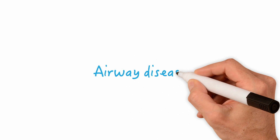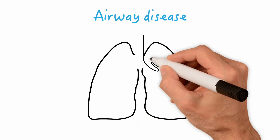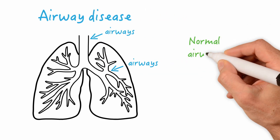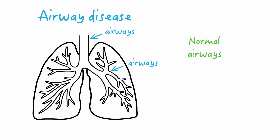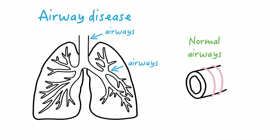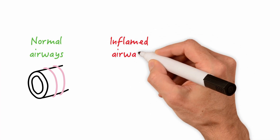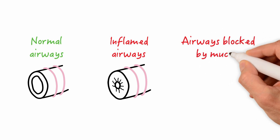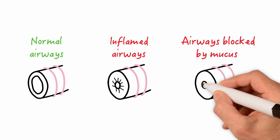First, the airway disease patient. When we refer to airway disease, we're simply referring to the physical airways that carry volume in and out of the lungs. Normal airways should be patent, allowing for adequate flow of volume. But in a patient with airway disease, the inside opening of the airway becomes narrow. This can be caused by inflammation inside the airway, which reduces the opening diameter, or mucus in the airway, which also reduces the opening diameter.